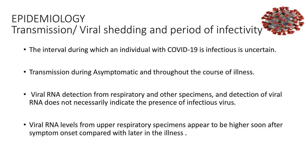The interval during which a COVID-19 patient is infectious is uncertain. Transmission during asymptomatic and pre-symptomatic periods is a unique feature of this virus. Viral RNA detection from respiratory specimens does not necessarily indicate the presence of infectious virus — it can be non-viable. Viral RNA from upper respiratory specimens appears to be higher soon after symptom onset compared to later in the illness.